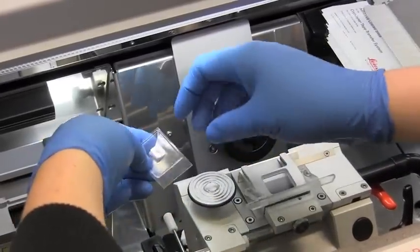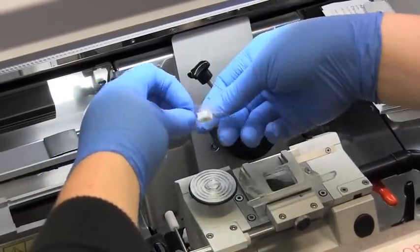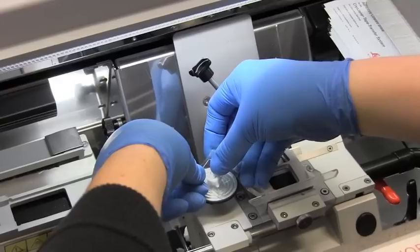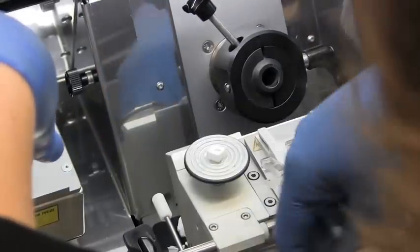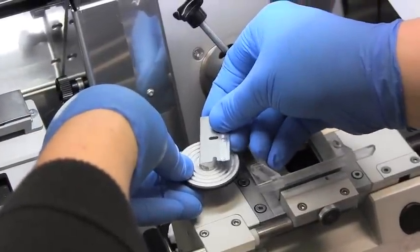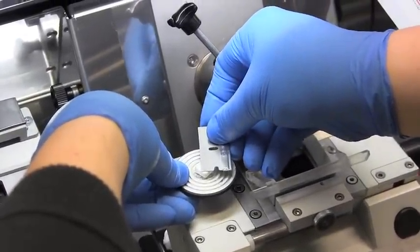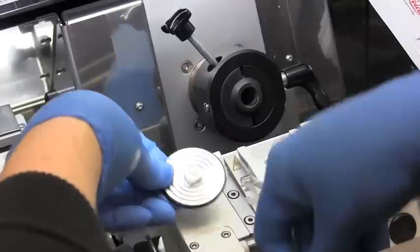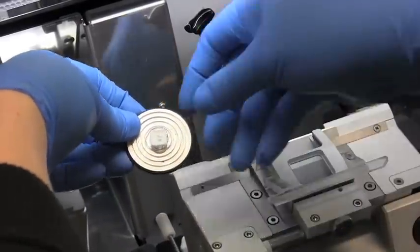So as it pops out, this is the side that's going to go down onto the chuck. And then use your tweezers or a razor blade to press it down. You can see your sample mounted in there.